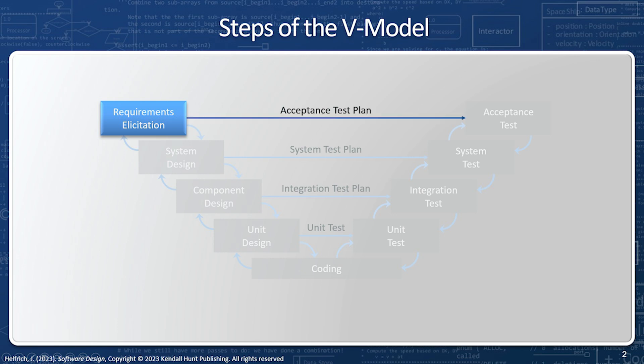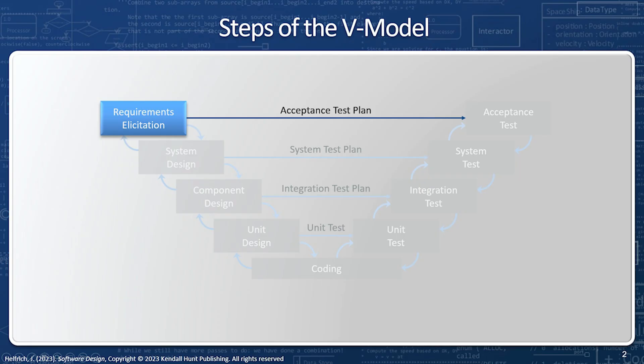One of the main deliverables from the requirements solicitation step is an acceptance test plan — namely, how do we know if the product is fit for use? From our initial requirements solicitation process, we're going to have a preliminary acceptance test plan. Note that as we revisit the requirements solicitation step again and again, our understanding of what needs to be built is going to be elaborated upon, and so our acceptance test plan is going to be added to. The important thing is to have one location where we store our complete understanding of what needs to happen for the product to be fit for use, and that place is the acceptance test plan.